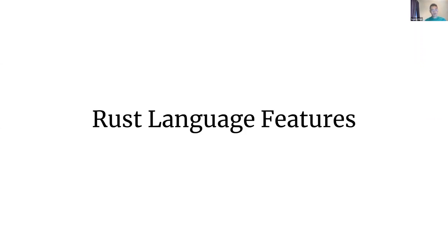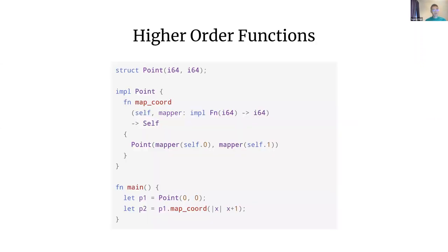A quick tour of language features in Rust: the first thing for functional programmers is that Rust supports higher-order functions. This means we can have closures — functions that capture variables — and you can pass them as values to other functions. The way higher-order functions in Rust are defined is using traits. For example, this map coordination function takes a point and a self, similar to object-oriented programming, and you can have a function implementing the Fn trait — a function that can be called multiple times — with a signature that takes an i64 and returns an i64.